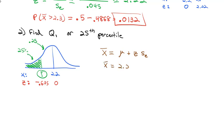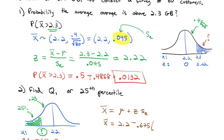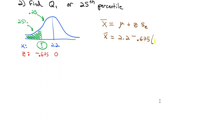So x bar is equal to our mean of 2.2 minus a 0.675, because it's negative, times the standard error, which we calculated the standard error to be 0.045. And 2.2 minus 0.675 times 0.045 gives us a mean of 2.17, putting units on it, gigabytes. The 25th percentile of means of sample of size 80 is going to be 2.17 gigabytes.